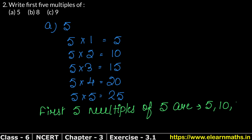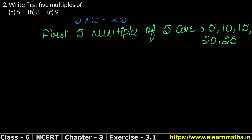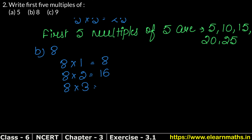Let's do the second part now. The second part is 8 — we have to find the first 5 multiples of 8. We multiply from 1: 8 times 1 is 8, 8 times 2 is 16, 8 times 3 is 24, 8 times 4 is 32, and 8 times 5 is 40.